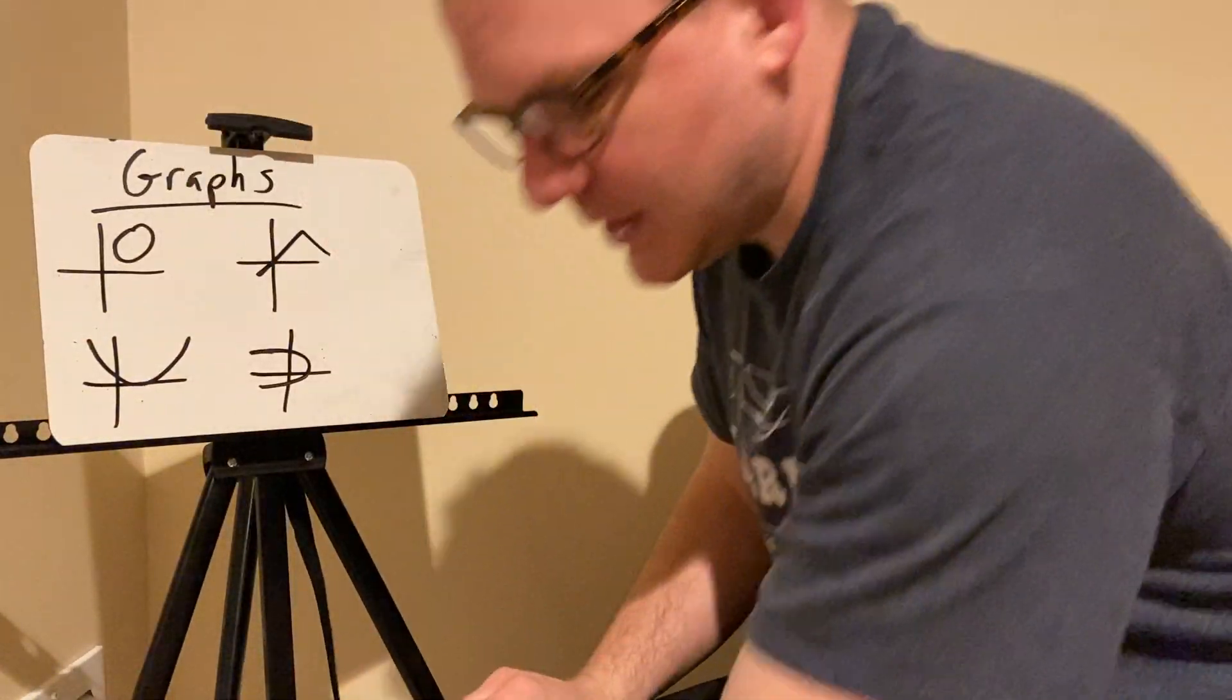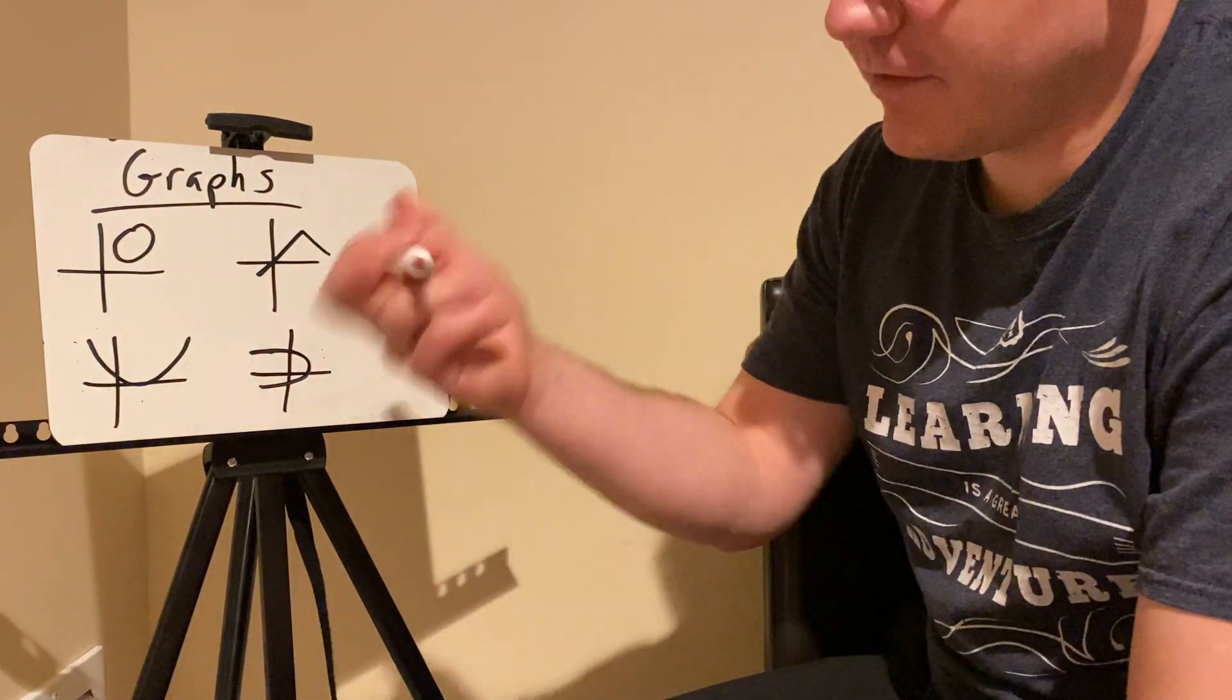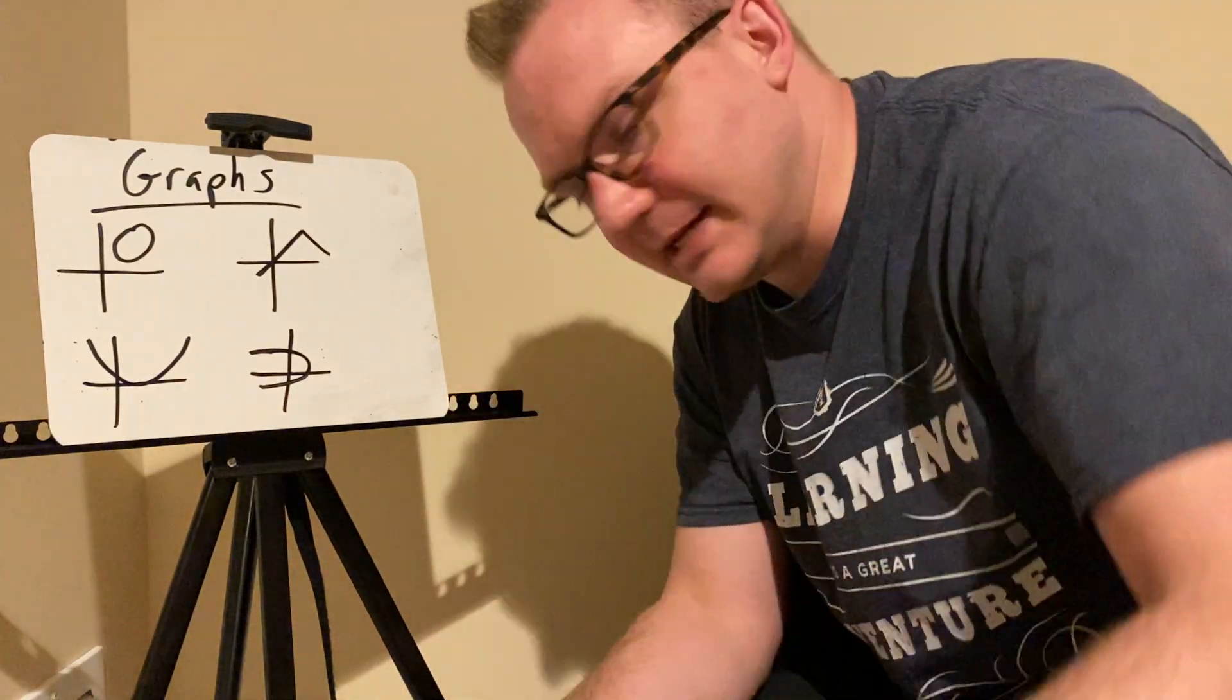All right, graphs. Two of these graphs are functions, two of them are not. For a graph, to tell if it's a function, we use what's called the vertical line test.